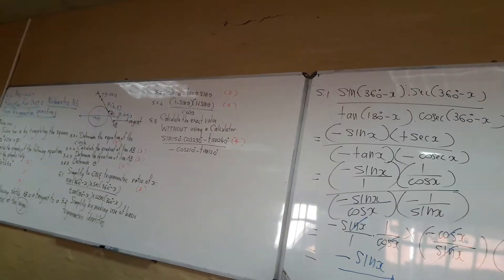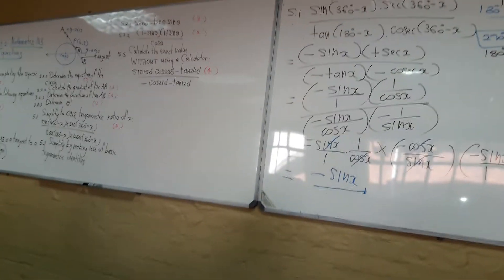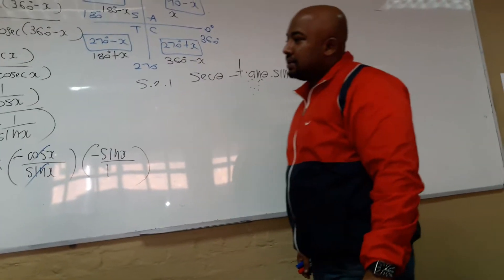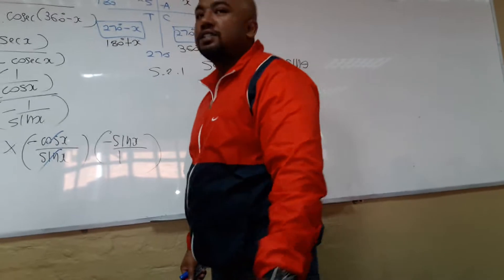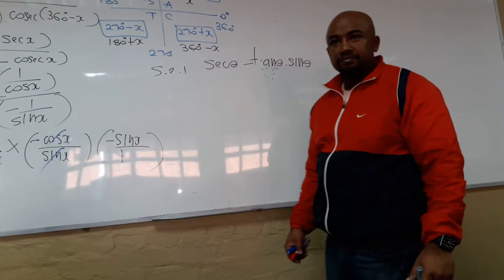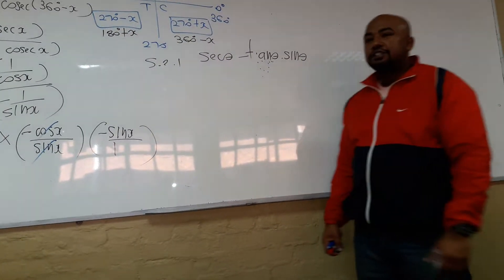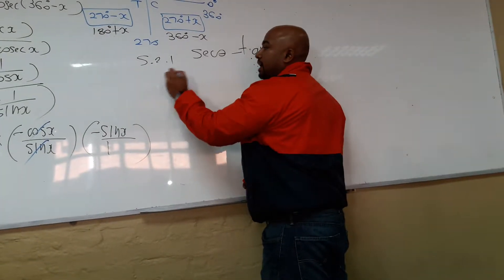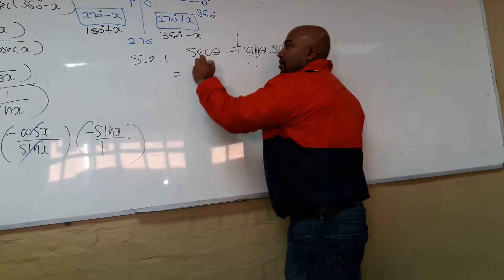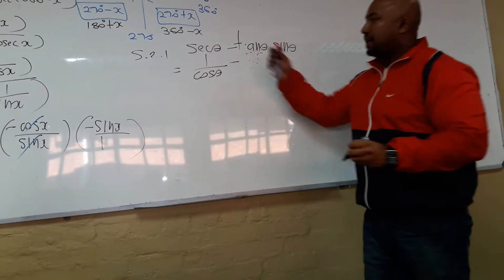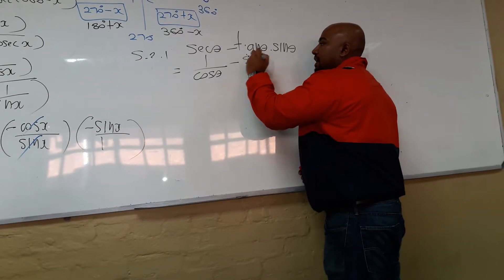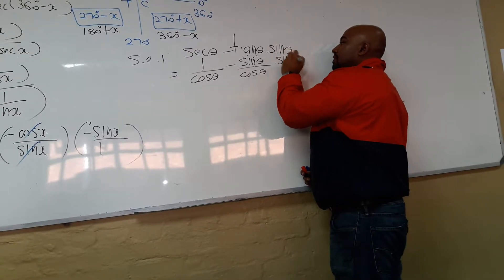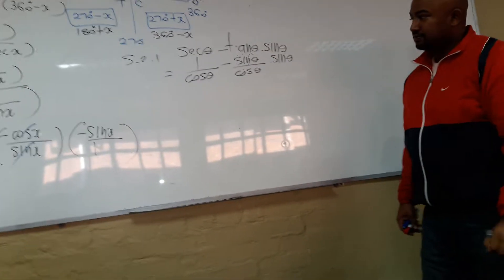What do we have there? Sec minus tan times sine. Simplify by making use of basic trig identities. Okay. Let's try and rewrite everything in terms of sine and cosine. So, sec can be written as what? 1 over tan.